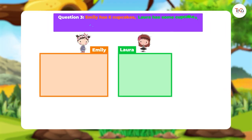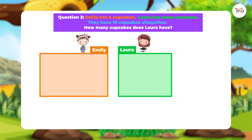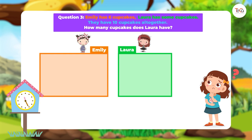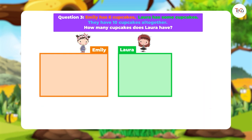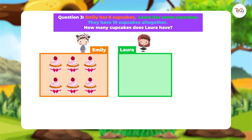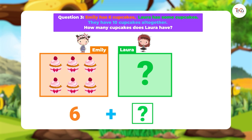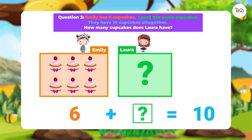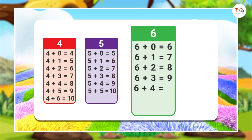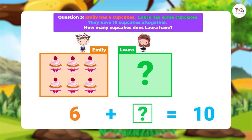Question 3. Emily has six cupcakes. Laura has some cupcakes. They have ten cupcakes altogether. How many cupcakes does Laura have? You can draw six cupcakes that Emily has, then draw a box to show the unknown number Laura has. You can write six plus something equals ten. If you recall the addition facts, six plus four equals ten.